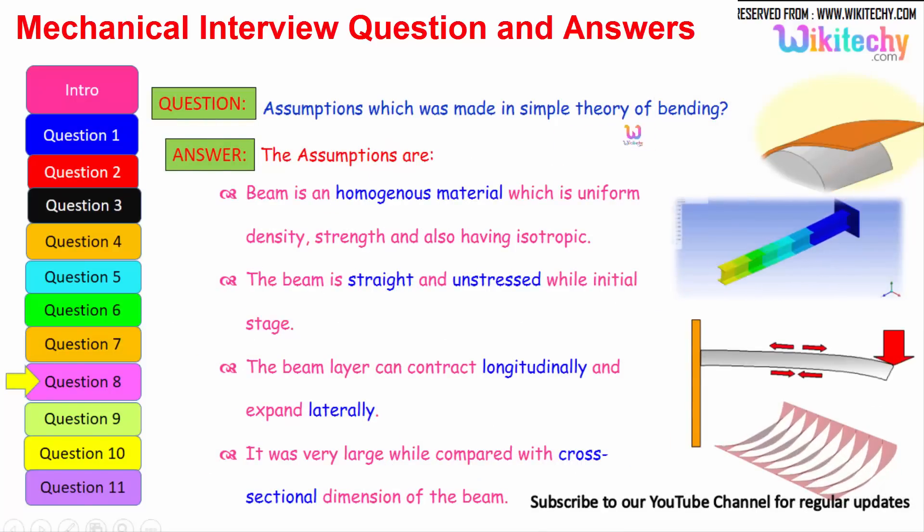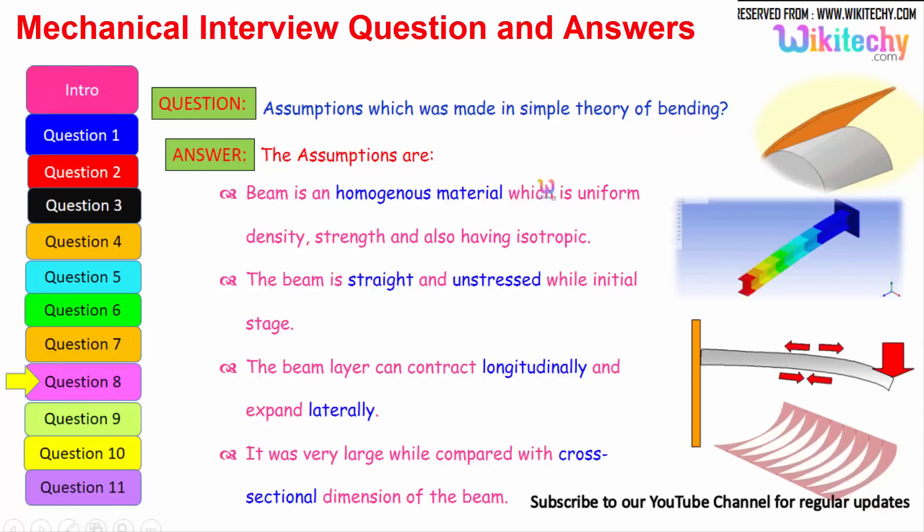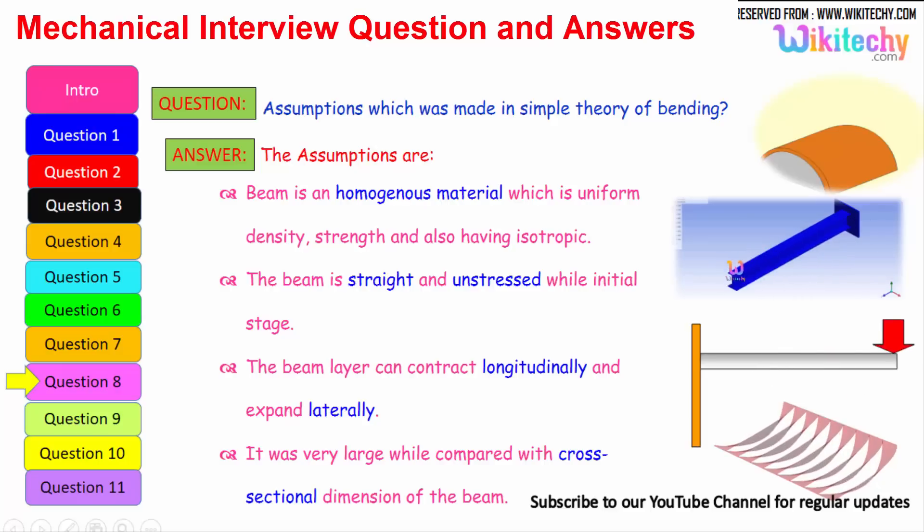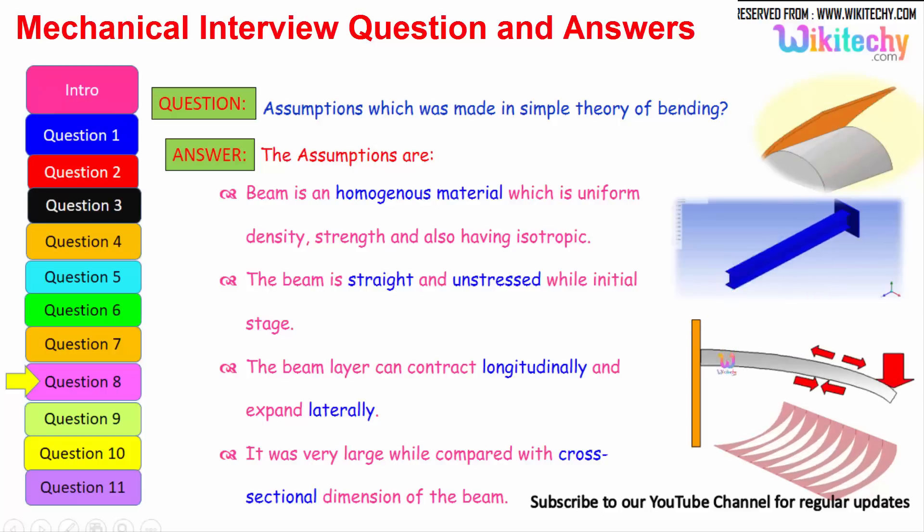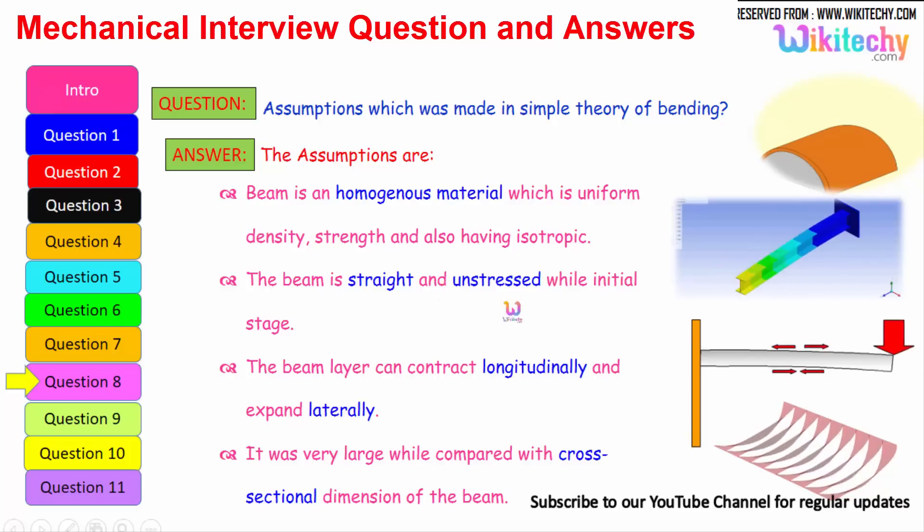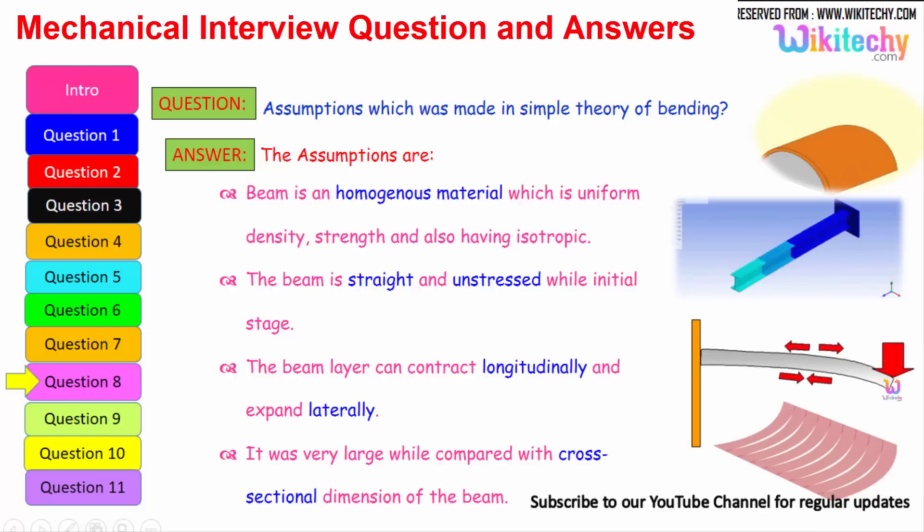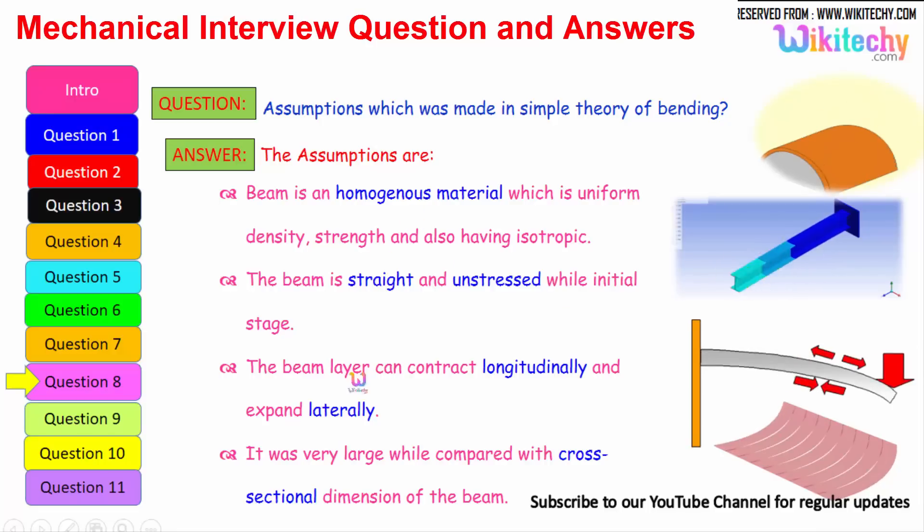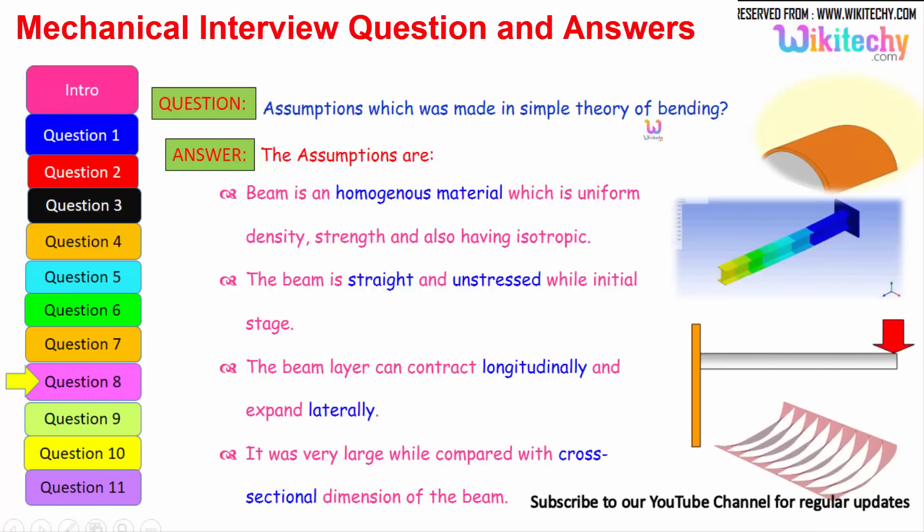What is the assumption which was made in simple theory of bending? The assumptions are: beam is homogeneous material which is uniform density. It should be uniform density, strength and also having isotropic. The beam is straight and unstressed while initial stage. The beam can contract longitudinally and expand laterally. It was very large when compared with the cross-sectional dimension of the beam. It should be very large when compared to the cross-sectional dimension of the beam. These are some of the assumptions we have to make for the theory of bending.